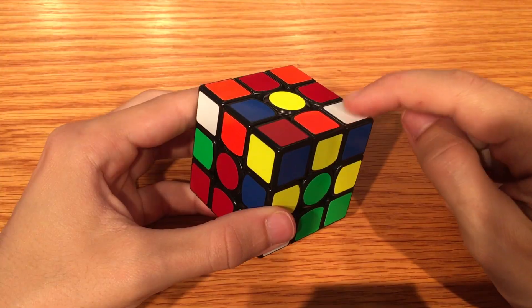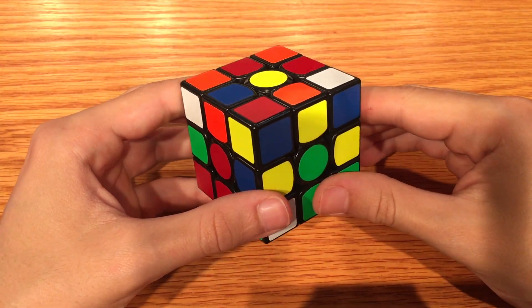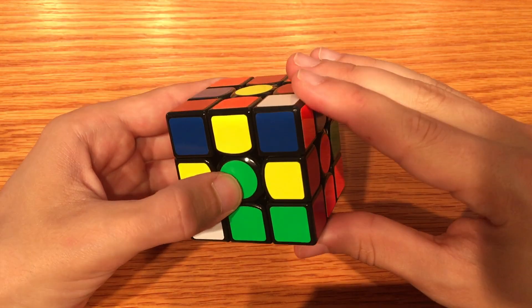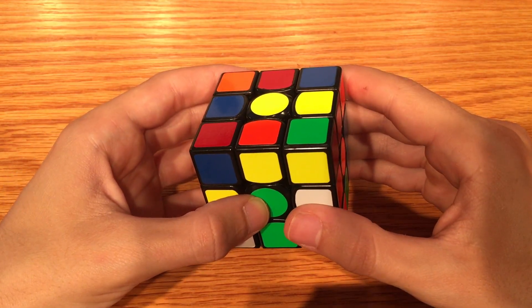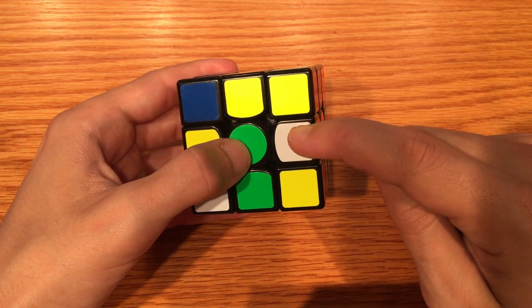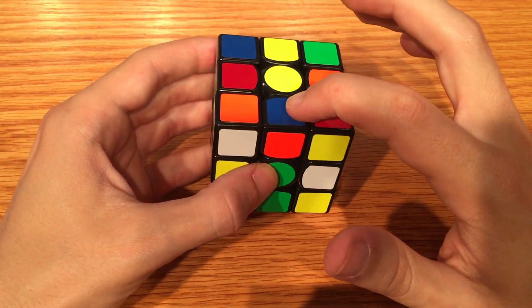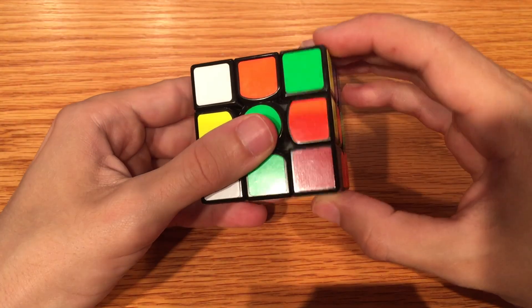Obstacle number two: you got the corner and edge on top, but the corner is white on top. To fix this, just throw the corner up. Again, this will mess up one of your cross pieces, so make sure to move the top layer so that neither your corner nor edge gets moved when you reset the cross piece.